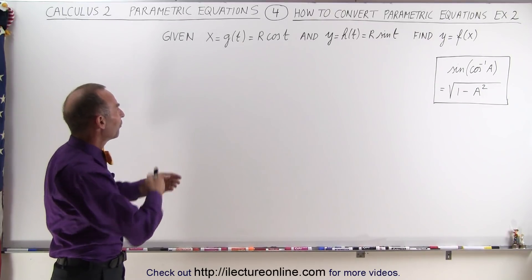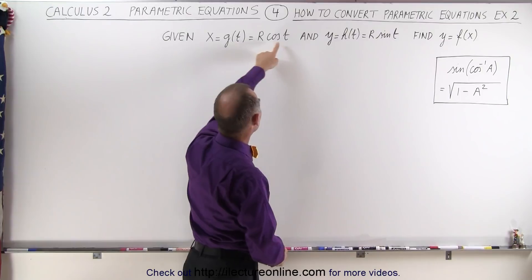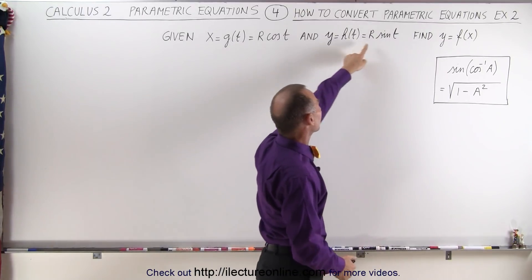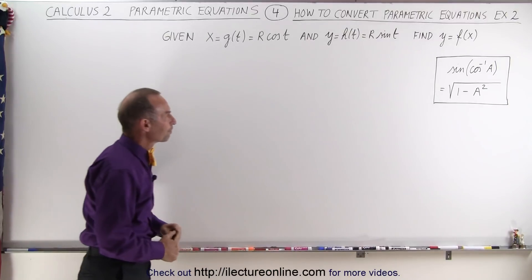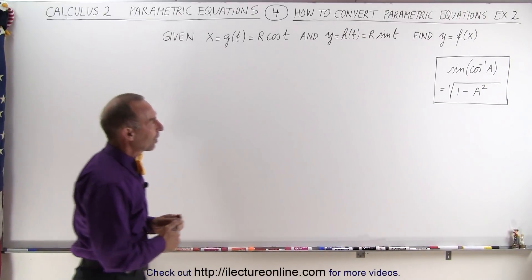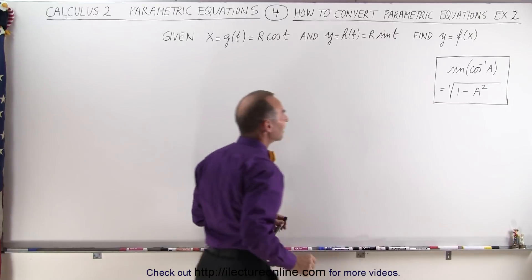would go from a function for x in terms of the variable t and a function of y in terms of variable t into a function of y in terms of x. Notice also I put this on the side here because we're going to need this identity.